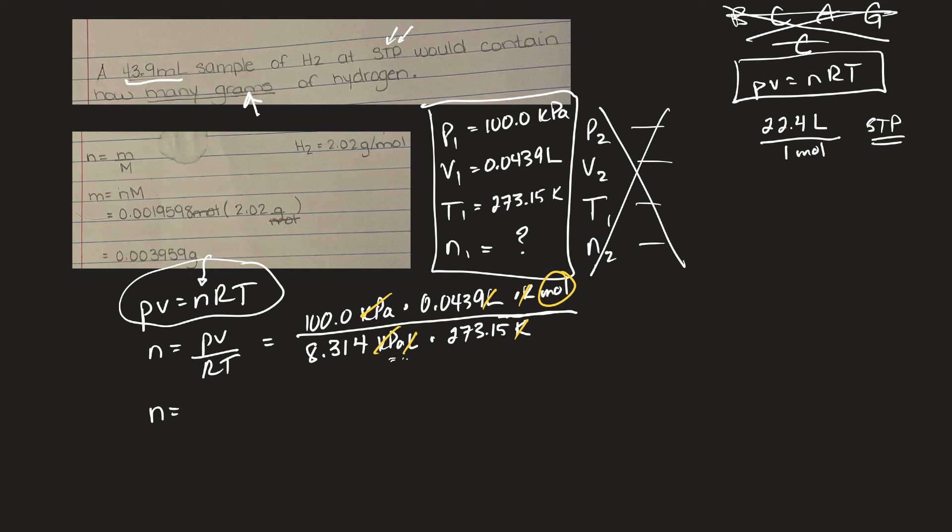So bracket 8.314 times 273.15. Go. So this gives me a number of moles of 0.0019330954 moles.